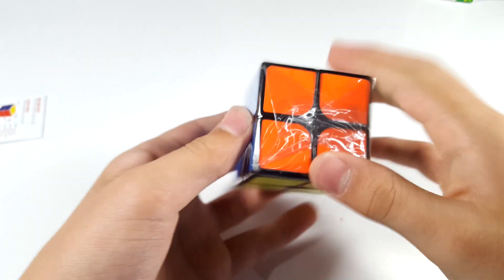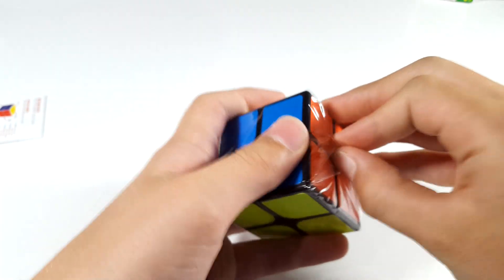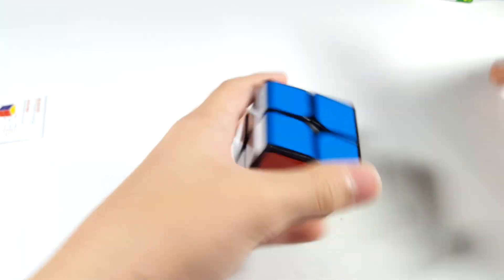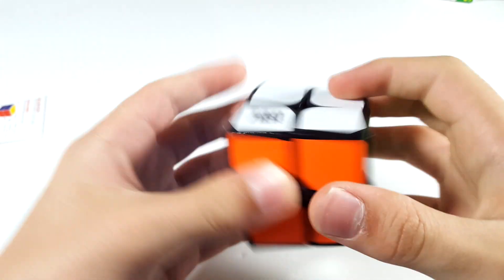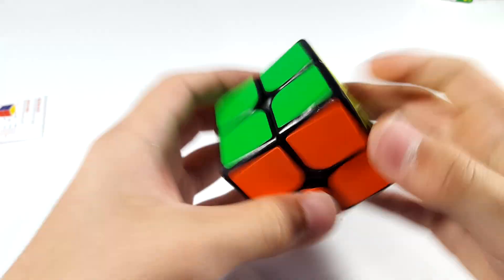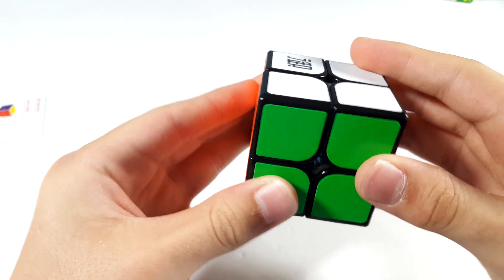And here is the 2x2. So, it comes with this plastic wrap, which is nice, I guess. Okay, there we go. So, it feels pretty solid in the hand. It is on decent tensions. So, let's try first turns.